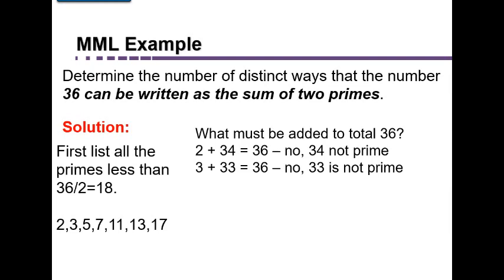3 plus 33 is 36, but 33 is not prime because it's divisible by 3 and 11. 5 plus 31 is 36. And if you check, you'll see that 31 is also a prime. It's only divisible by 1 and 31. So that's one way to write 36 as a sum of 2 primes.